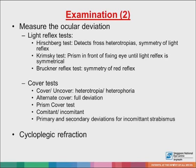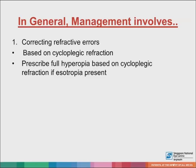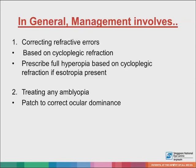Cycloplegic refraction should be performed, and always examine the fundus. In general, when managing a child with strabismus, any refractive error should first be corrected, based on cycloplegic refraction. If there's an esotropia present, prescribe the full hyperopic sphere. If there's any amblyopia, this should be treated with occlusion therapy. Orthoptic treatment may be started if indicated, such as fusion exercises in older children with convergence insufficiency or intermittent exotropia.